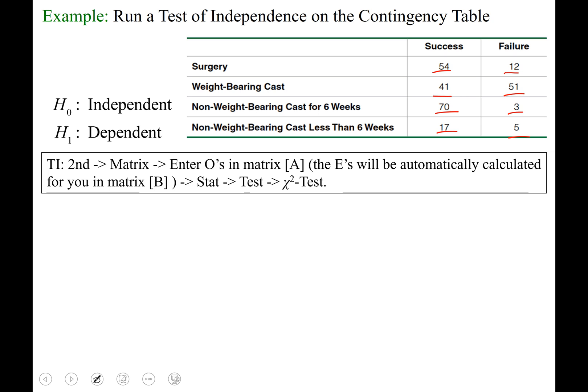When you see the capital E to the negative 12, it means move the decimal 12 places to the left. So our p-value is actually 0.0...00129.